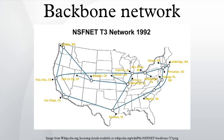Normally, the backbone's capacity is greater than the networks connected to it. A large corporation that has many locations may have a backbone network that ties all of the locations together. For example, if a server cluster needs to be accessed by different departments of a company that are located at different geographical locations, the pieces of the network connections that bring these departments together is often mentioned as network backbone.